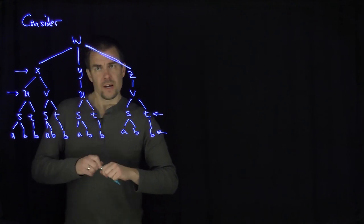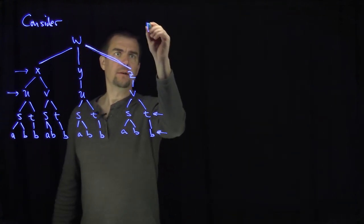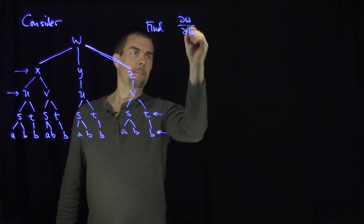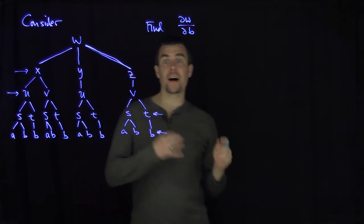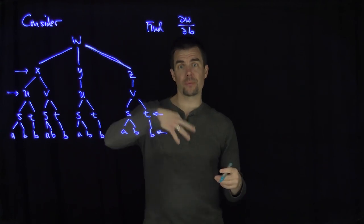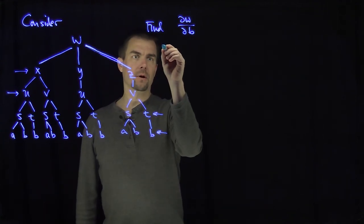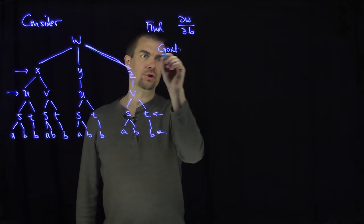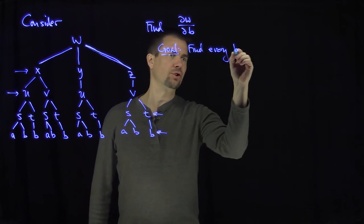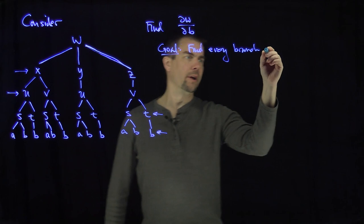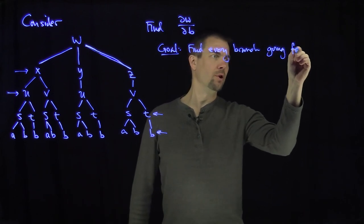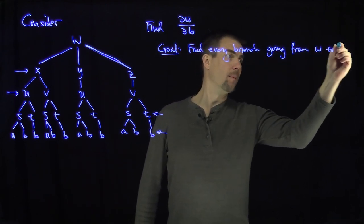So what we'd like to do now is find partial w partial b. I need to find every branch of this tree that goes from w to b. Our goal is to find every branch going from w to b.